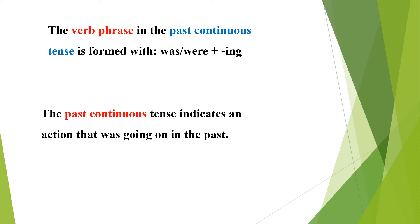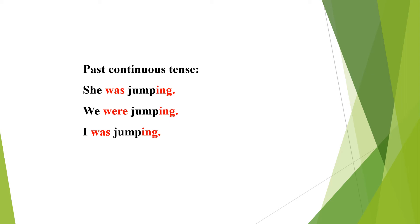The verb-phrase in the past continuous tense is formed with was or were plus the ing form. The past continuous tense indicates an action that was going on in the past. For example, she was jumping — here 'was' is the helping verb. We use 'were' as the helping verb with plural pronouns or plural nouns. I was jumping.